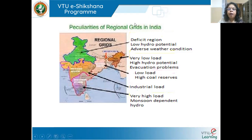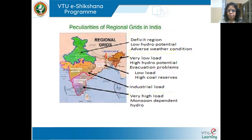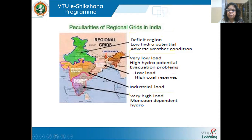The Northern grid has low hydro potential and extreme weather conditions. In the Northeast, industrial development is low, so the load is generally low, but there is very good potential for hydel power. However, the Himalayas pose a problem for evacuating the generated power. In the Eastern region, they are not highly developed with low loads, but they have very good coal reserves, so thermal plants are prominent there.